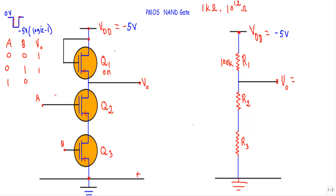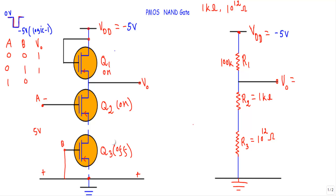Case three: A is at logic one (minus five volts applied) and B is at logic zero (grounded). Q2 is in the ON state with R2 = 1 kΩ, and Q3 is in the OFF state with R3 = 10^12 Ω. Since Q3 is OFF, its source and drain are disconnected — R3 is removed from the network. There is no closed path, so ID equals zero, the voltage drop across R1 is zero, and minus five volts appears at the output — logic one.